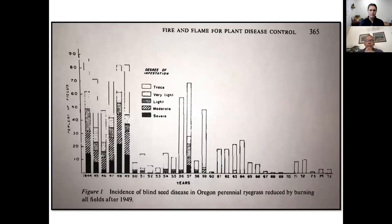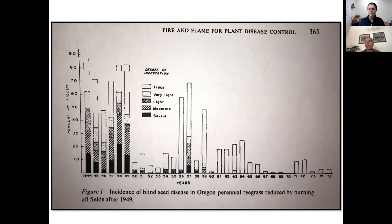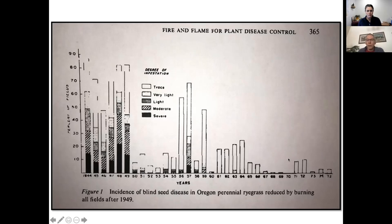Here's some research — from the late 1970s — looking at the incidence of blind seed disease in Oregon on perennial ryegrass. This fungal disease was nearly limiting production of perennial ryegrass seed. Infected seed would fall to the ground, survive in stubble, and reinfect crops the following year. From 1944 to 1949, before burning was instigated, there was considerable disease incidence. Once they started burning, they saw a marked reduction in disease, making this one of the few strong examples of good efficacy using burning to manage a plant disease.